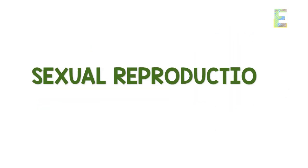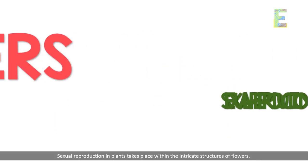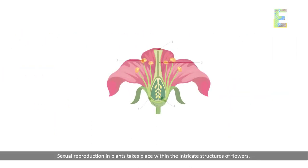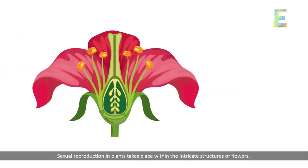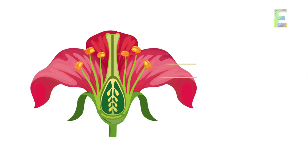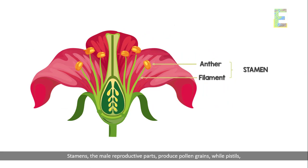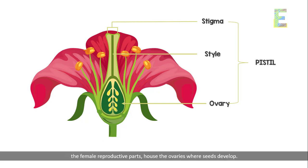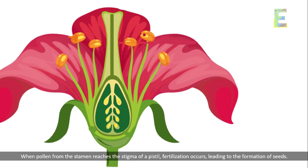Sexual reproduction in flowers: sexual reproduction in plants takes place within the intricate structures of flowers. Stamens, the male reproductive parts, produce pollen grains, while pistils, the female reproductive parts, house the ovaries where seeds develop. When pollen from the stamen reaches the stigma of a pistil, fertilization occurs, leading to the formation of seeds.